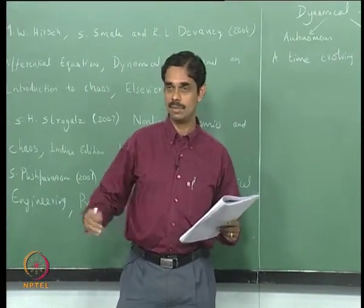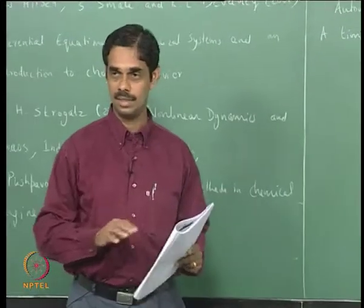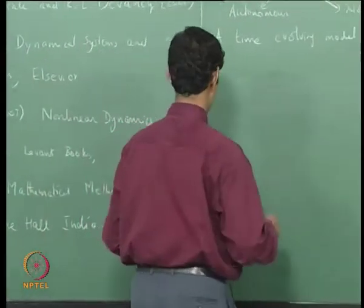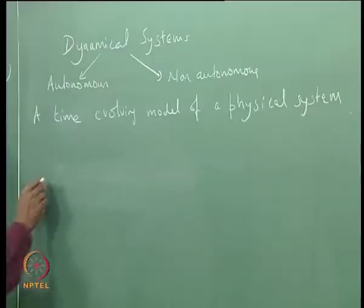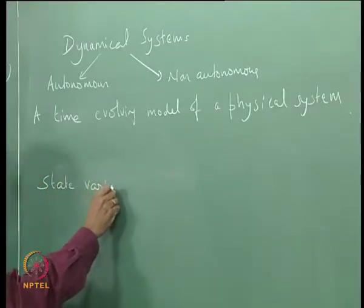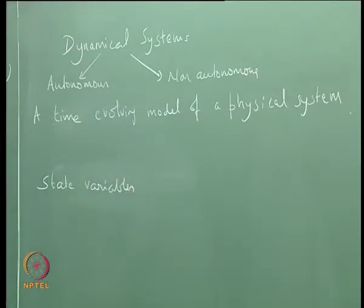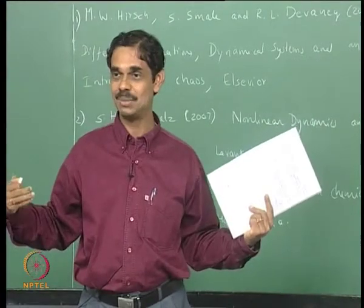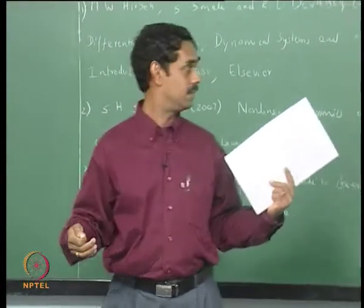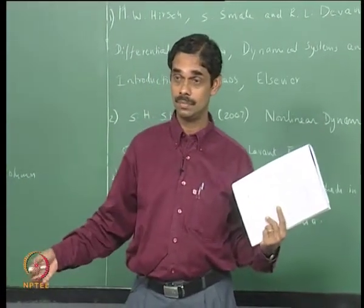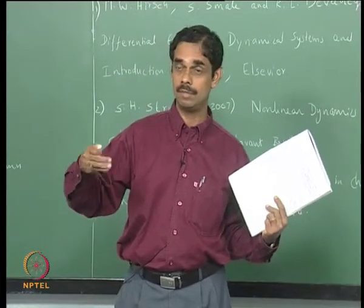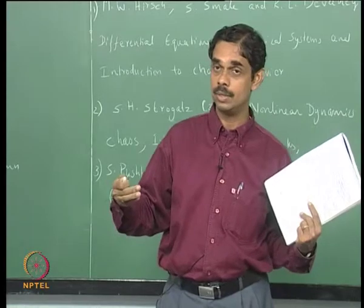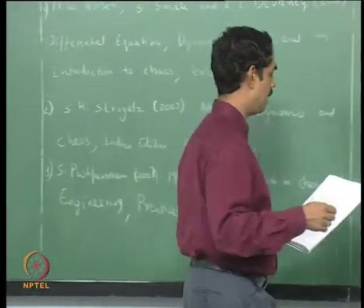A dynamical system consists of variables and parameters. We have state variables — try to relate everything to the specific problem we studied. What were our state variables in our model of the Rijke tube? The chi's, which correspond to pressure and velocity. We had a PDE with pressure and velocity, which we reduced to ODEs in the form of eta and eta-dot. Those are the state variables.